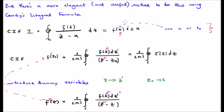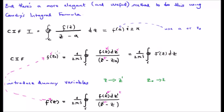Whether I use the placeholder a or z_0 for the pole is irrelevant. In this expression I use a, but for the remainder of the video I'm going to use z_0. I have rearranged the Cauchy integral formula for the residue so we have f(z_0) equals 1 over 2πi times the anti-clockwise closed contour integral of f(z) dz over z minus z_0. Now I'm going to introduce two dummy variables: z goes to z prime and z_0 goes to z.